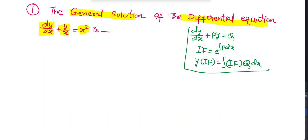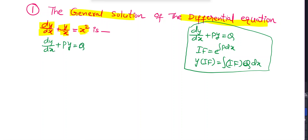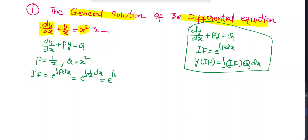Here the equation is dy/dx + (1/x)·y = x², so P = 1/x and Q = x². The integrating factor is e^(∫(1/x)dx) = e^(log x) = x.